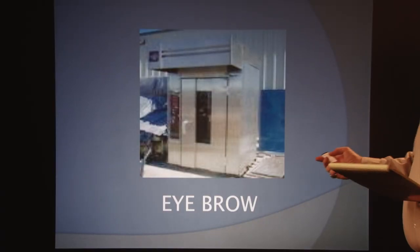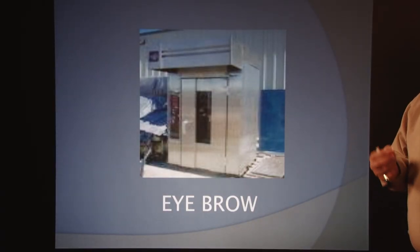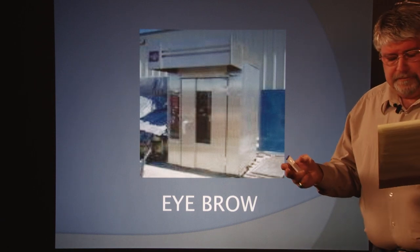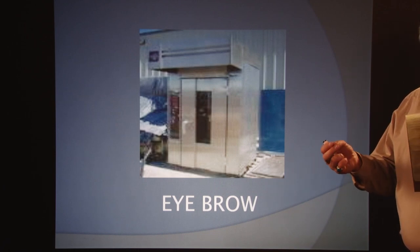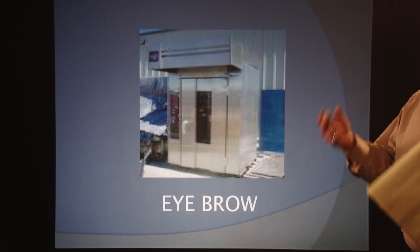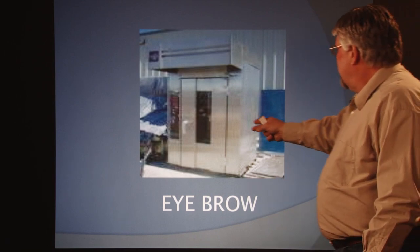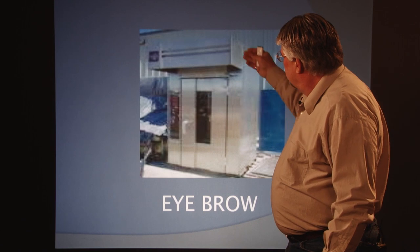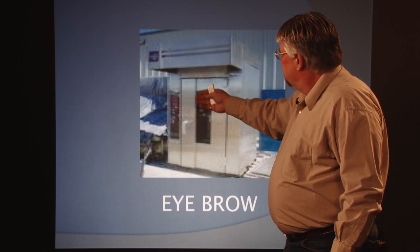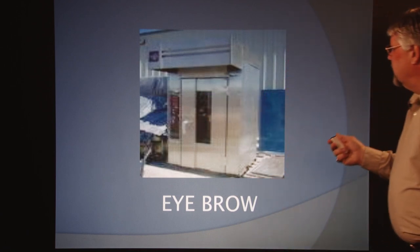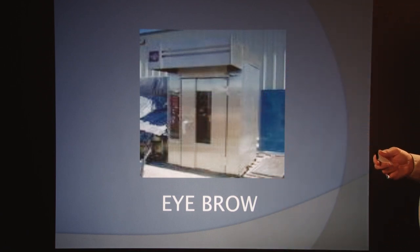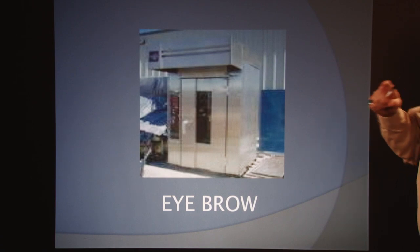The next one is the eyebrow hood. The eyebrow hood is mounted directly on the surface of the appliance, such as an oven or a dishwasher, above the opening doors, so that steam, smoke, fumes, vapors, or odors can be emitted into it. This one has a door right here that opens up — everything that comes out goes right up into the hood. You'll see them especially on large dishwashing equipment so that all the steam goes up and out.